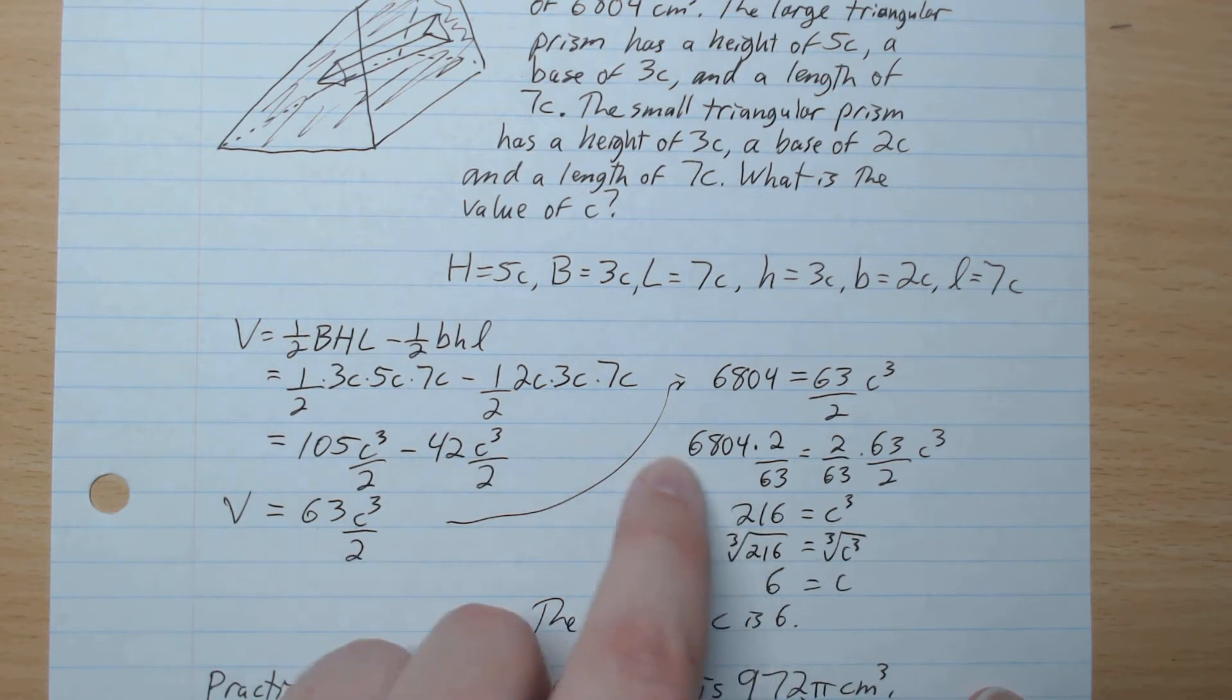What's left is c³ equals this, which is 6804 times 2 divided by 63. And that gives 216. We now cube root both sides to get rid of the cube, and so the value of c is 6.